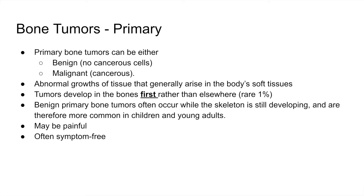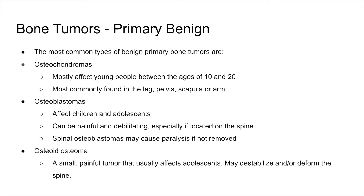Primary bone tumors may be painful, but are often symptom-free. The most common benign types are osteochondromas, mostly affecting young people ages 10 to 20 in the leg, pelvis, scapula, or arm. Osteoblastomas affect children and adolescents and can be painful and debilitating, especially in the spine, potentially causing paralysis if not removed. Osteo-osteomas are small painful tumors in adolescents that may destabilize and deform the spine. The key takeaway is that primary bone tumors usually occur in young adults or children because their bones are growing, and may or may not be painful.